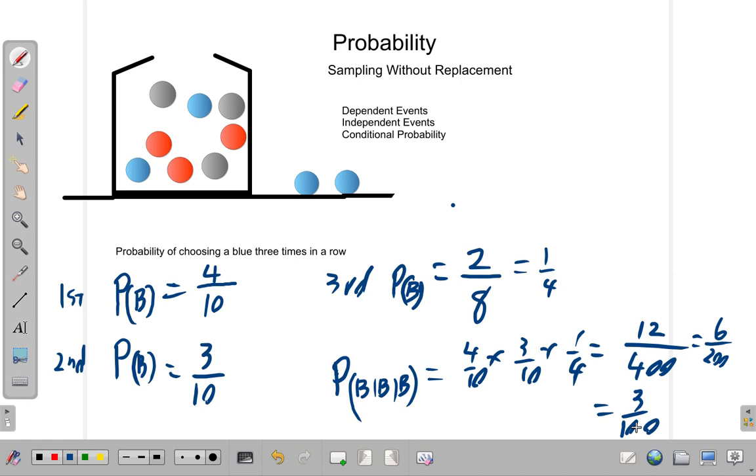There's a three percent chance of randomly picking three blue marbles all in a row. So, you see that? That's how you do that calculation. All right?